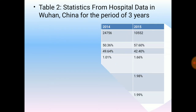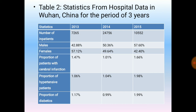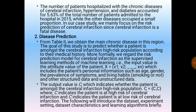Table 2 shows statistics from hospital data in Wuhan, China for a three-year period covering 2013, 2014 and 2015, including number of inpatients, male/female percentages, proportion of patients with cerebral infarction, proportion of hypertensive patients, and proportion of diabetes patients. The number of patients hospitalized with chronic diseases of cerebral infarction, hypertension and diabetes accounted for 5.63% of the total patients admitted in 2015, while other diseases occupied a small proportion. Our case study mainly focuses on risk prediction of cerebral infarction since it is a fatal disease.